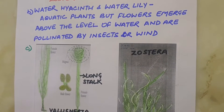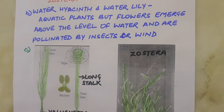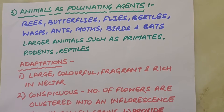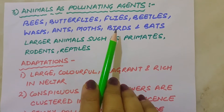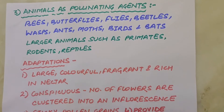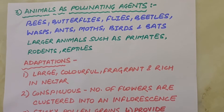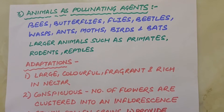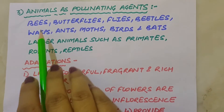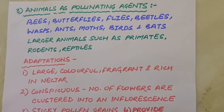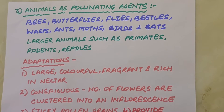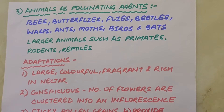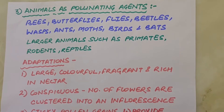The next pollinating agents are biotic factors — animals. Majority of flowering plants use a range of animals as pollinating agents: bees, butterflies, flies, beetles, wasps, ants, moths, birds like sunbirds and hummingbirds, and bats are the common pollinating agents. Among animals, insects, particularly bees, are the dominating biotic pollinating agents. Even larger animals such as primates, arboreal rodents or even reptiles have also been reported as pollinators in some species.